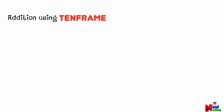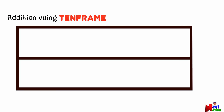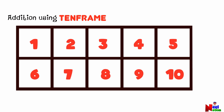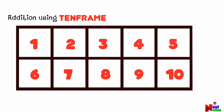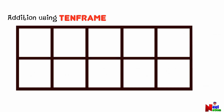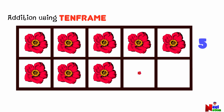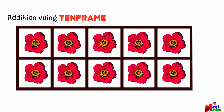Now, let's learn how to do addition using ten frames. A ten frame is a rectangular box divided into ten equal boxes or spaces. A ten frame has two rows of five boxes each. This is the first row, and this is the second row. You can show numbers in the ten frame by filling each box. When the first row is full we have five objects, and when both rows are full we have ten objects.